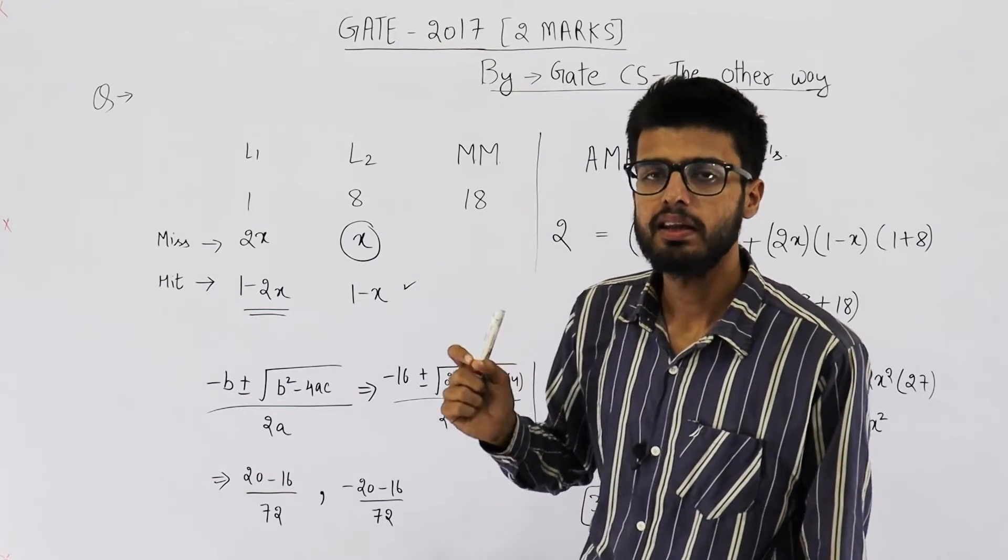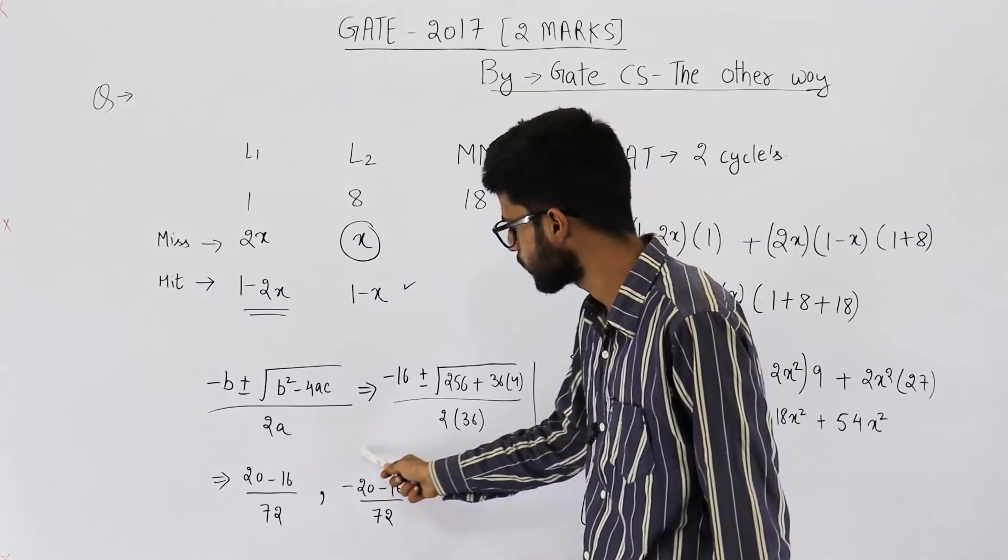This one will be a negative root. Now, miss rate which is a probability, a value between 0 and 1, can never be negative. So, just ignore this value. You can see if you take negative common, the entire value will become negative. That means this one is ignored. This is 4 upon 72, and it comes out to be 0.05555. So, x is 0.05555, 2x will be 0.1111.